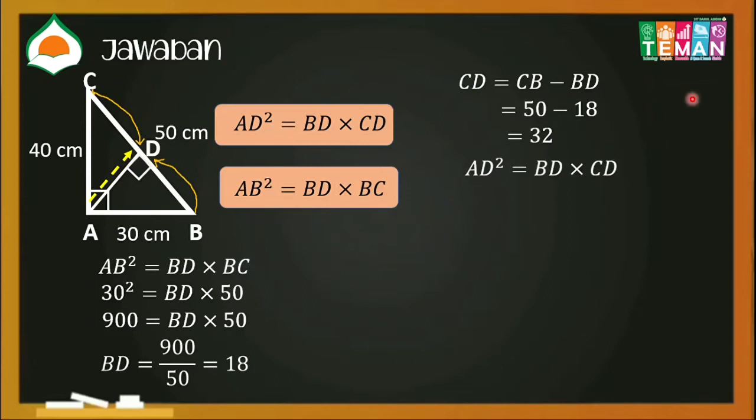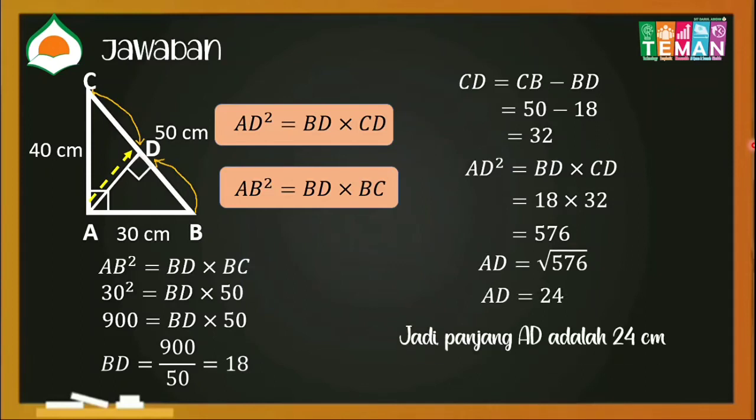Sekarang, kita sudah bisa menggunakan rumus yang pertama, yaitu AD kuadrat sama dengan BD dikali CD. Kita masukkan nilainya, BD-nya 18, CD-nya 32, maka AD kuadrat sama dengan 576. Untuk mencari AD-nya saja, tinggal kita tarik akarnya ya, teman-teman. Maka AD sama dengan 24. Jadi, panjang AD-nya 24 cm.